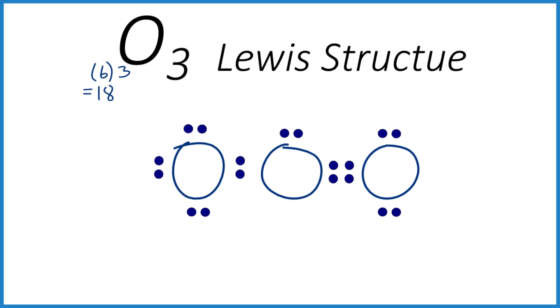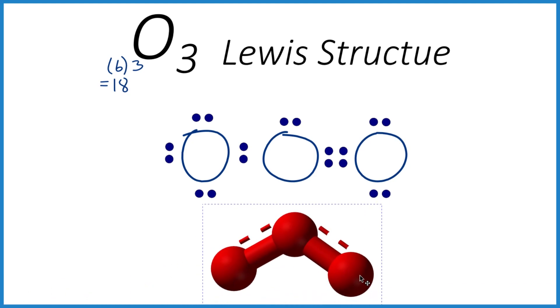Two important things to note. The molecular geometry—it looks linear here, but this lone pair is pushing things down. So we end up with a bent molecular geometry.